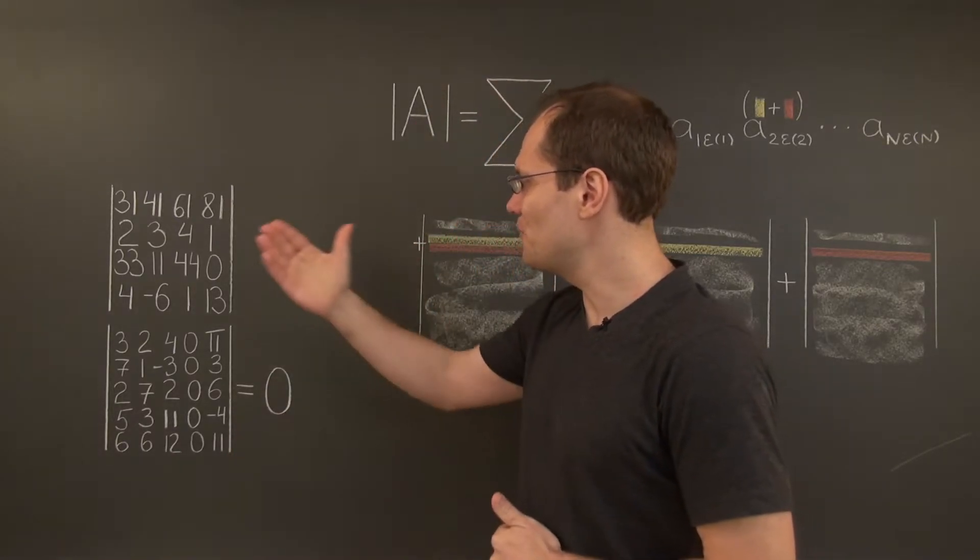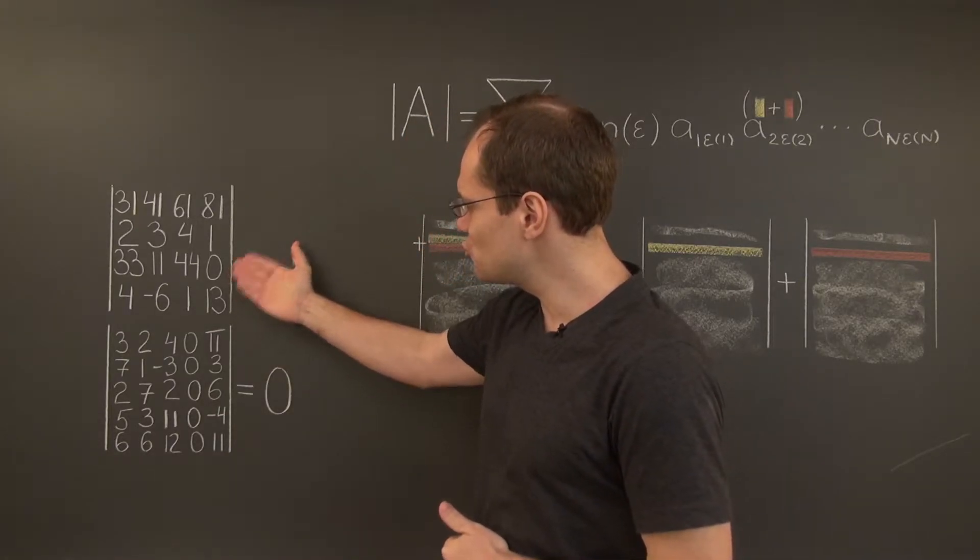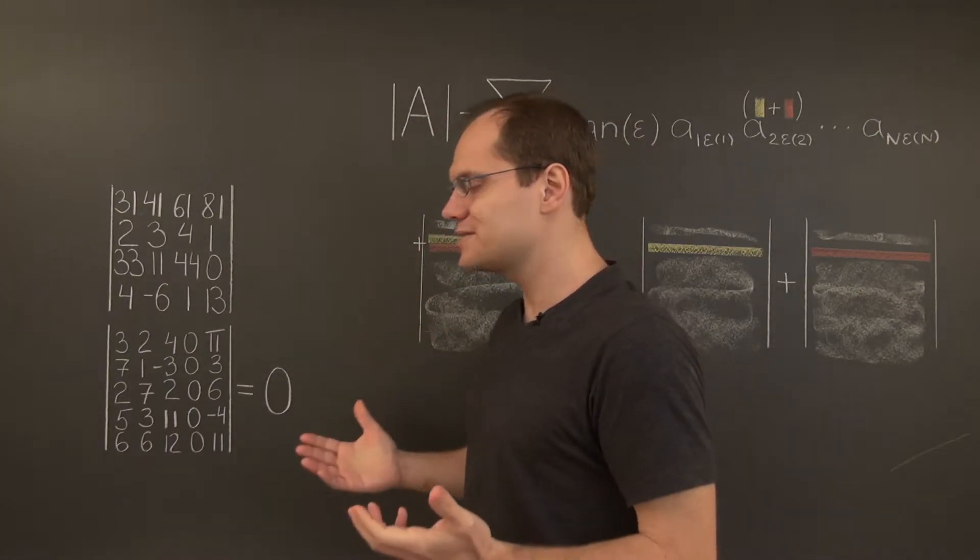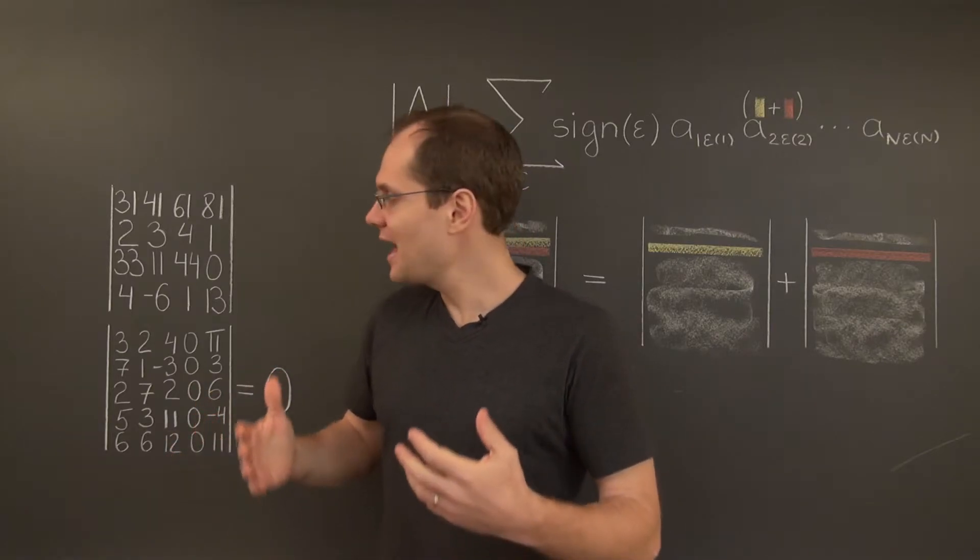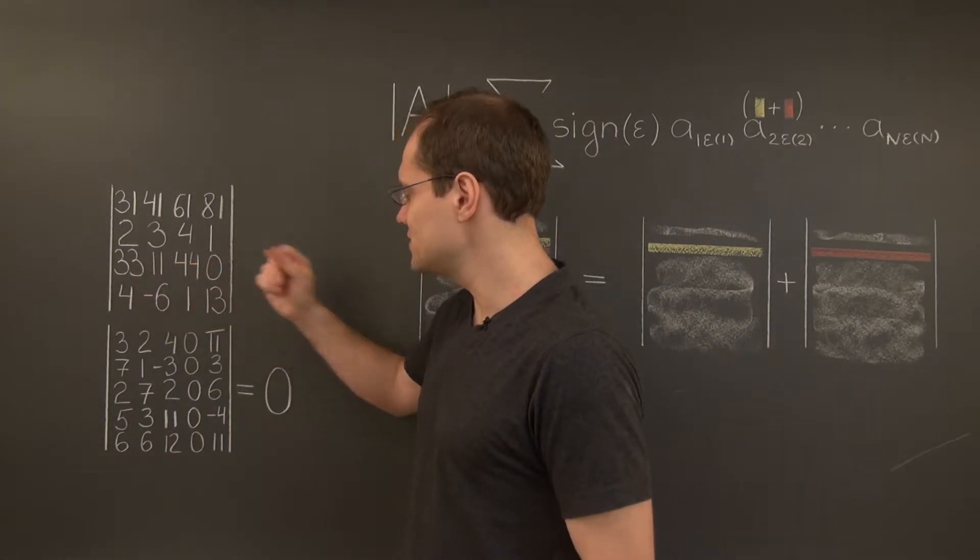Let's consider an example. Once again, direct your attention to this matrix. And notice that the third row can be represented or thought of as 11 times 3, 1, 4, 0.